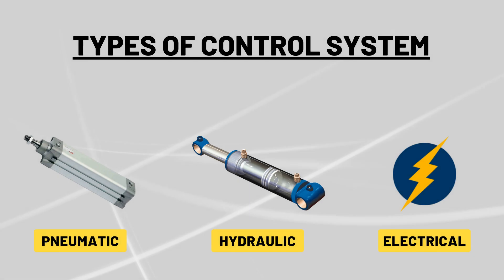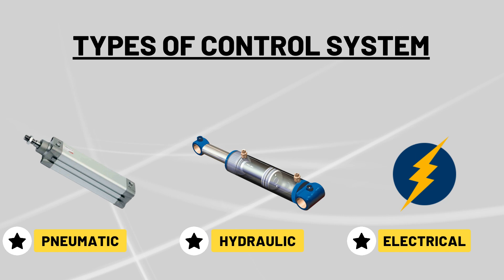A control system manages commands, directs, or regulates the behavior of other devices or systems using control loops. It can range from a single home heating controller using a thermostat to controlling a domestic boiler, to large industrial control systems used for controlling processes and heavy machinery. There are three types of control systems: pneumatic, hydraulic, and electrical.